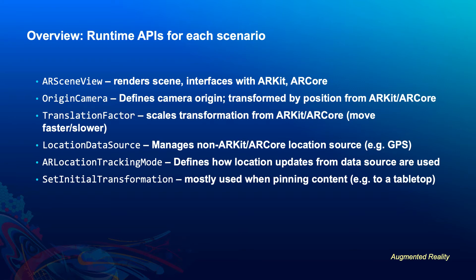It's worth highlighting there are two types of location: global location, and very fine-grained local location measured in fractions of a centimeter by ARKit and ARCore. AR location tracking mode defines how location updates from a data source are used. With continuous tracking, GPS locations continuously update the origin camera. You can use initial positioning where GPS sets the start point and ARKit/ARCore handle movement thereafter, or turn it off altogether — useful for tabletop or flyover scenarios. Set initial transformation is what enables offsets for tabletop and flyover.